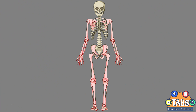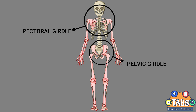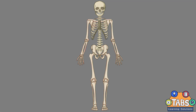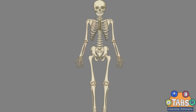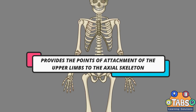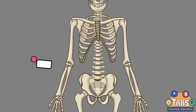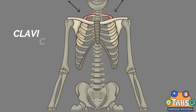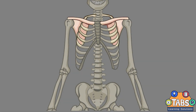The appendicular skeleton consists of the upper and lower limbs. The upper limbs consist of the pectoral girdle, the pelvic girdle, the arm, and the hand. The pectoral girdle provides the points of attachment of the upper limbs to the axial skeleton. It consists of the clavicle or collarbone in the anterior, and the scapula or shoulder blades in the posterior.